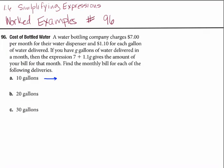Well, in each case, we have the expression $7 for the water dispenser plus $1.10 per gallon. So we can rewrite the expression, $7 for the water dispenser plus $1.10 per gallon, where the number of gallons is going to vary according to the individual situation. For this particular family, it's 10 gallons.